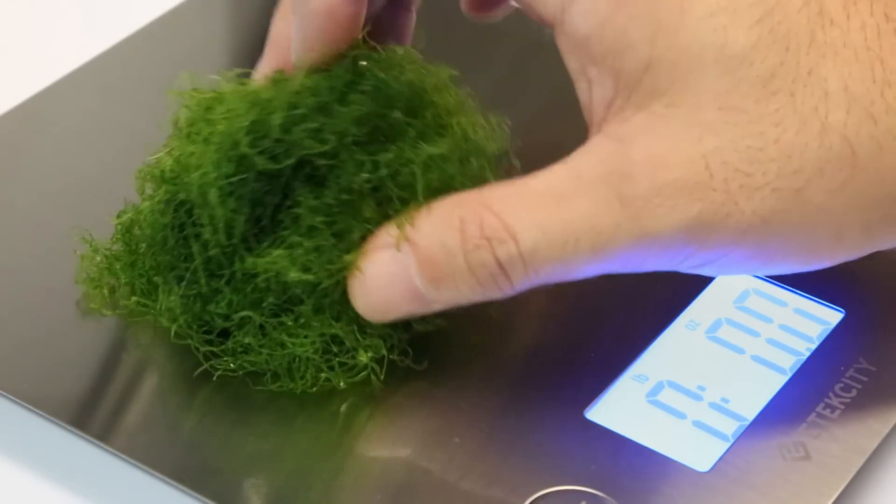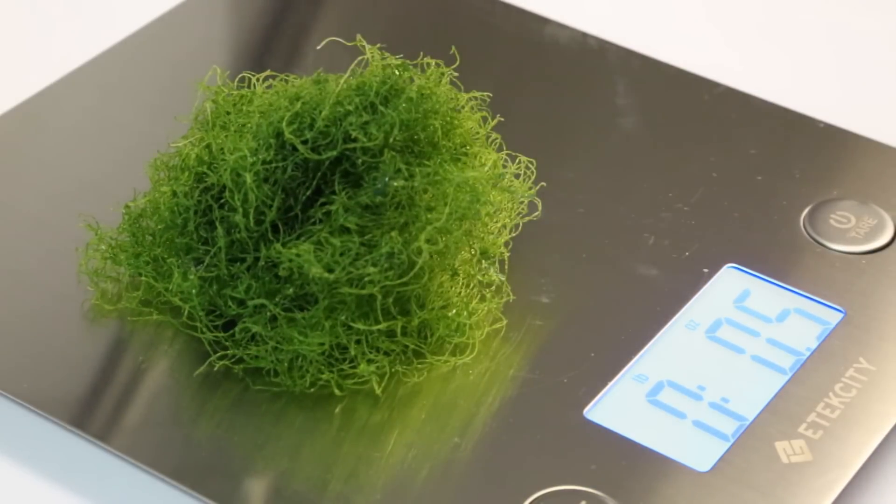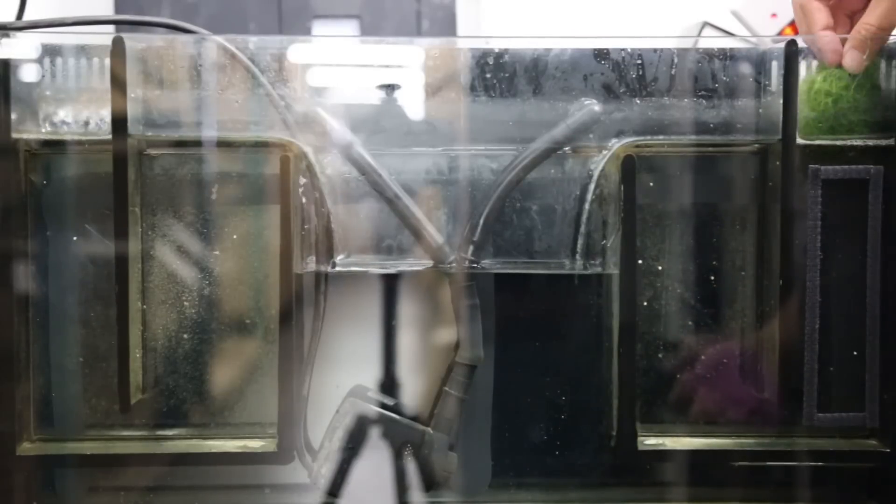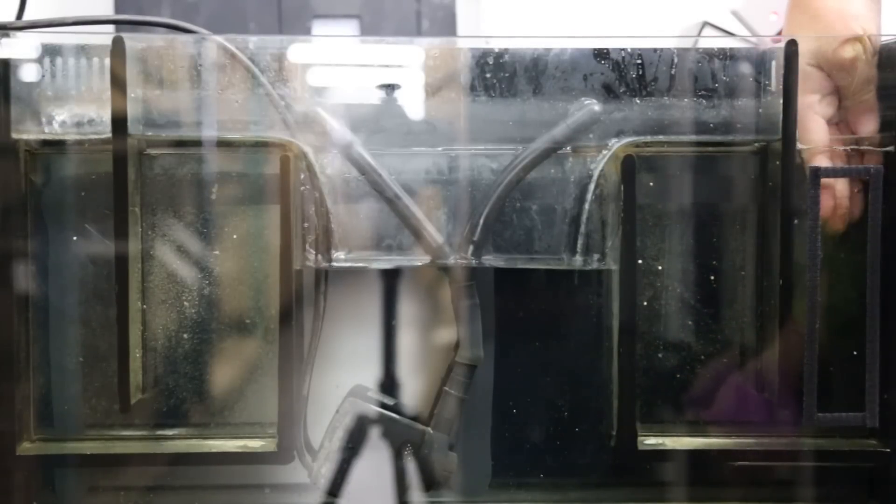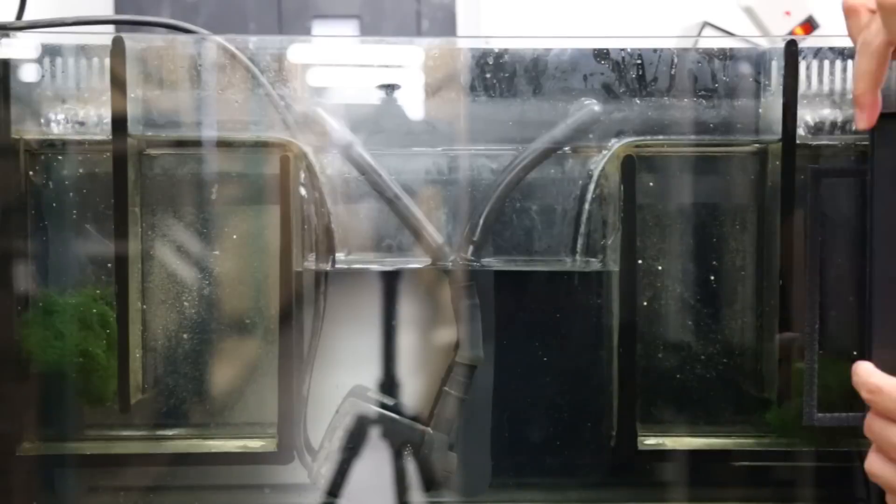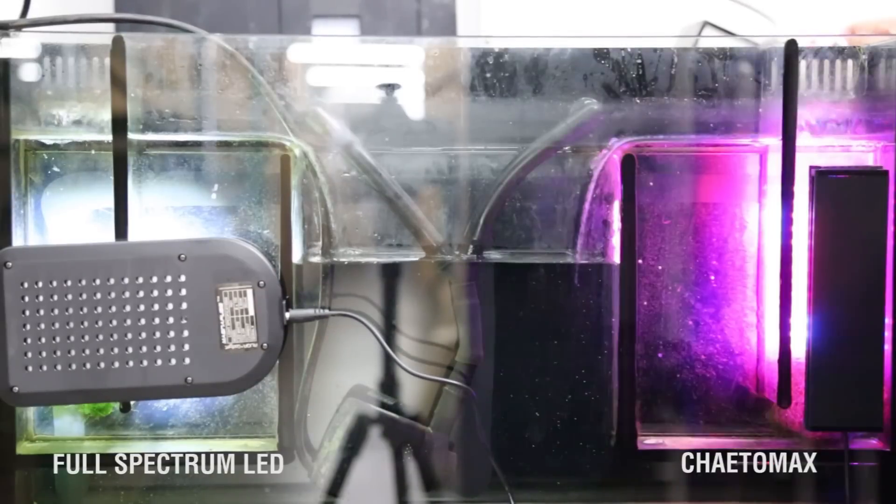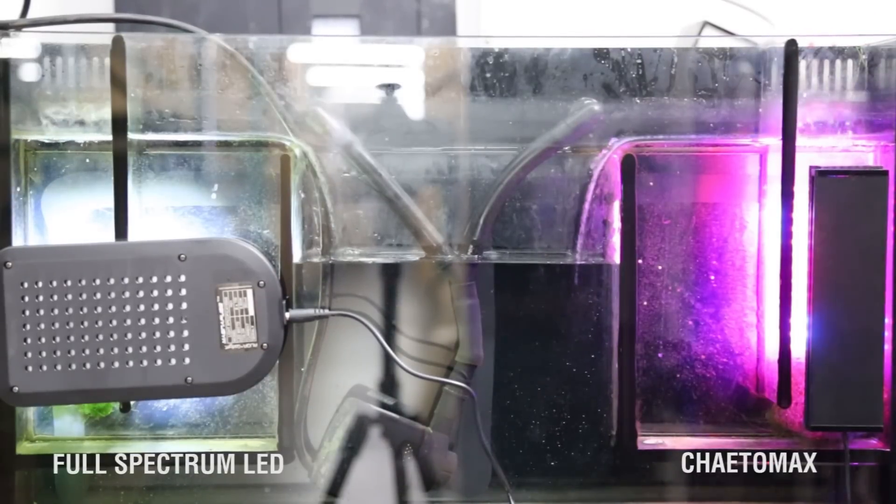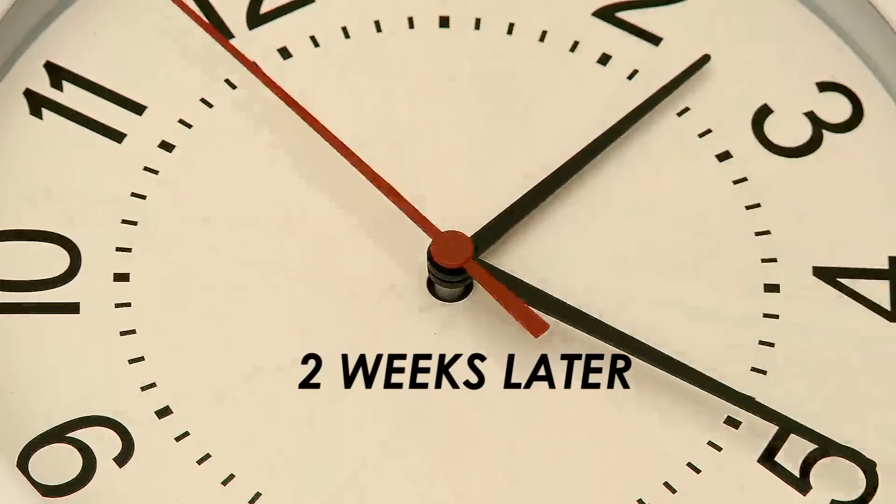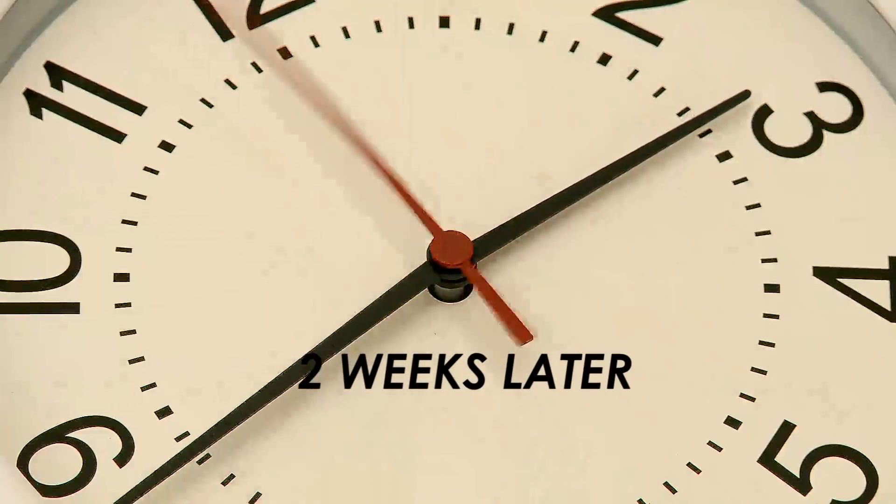We took some Chaetomorpha and weighed it out, put equal parts on each side of our tank, attached the full-spectrum light on one side and the Chetomax Refugium LED to the other. We ran a 12-hour on-off reverse daylight cycle, fed the tank daily, and waited two weeks to see the outcome.